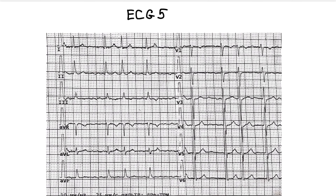Now let's think about the rhythm here. We look for the p-wave, but there are no p-waves. The QRS complex is narrow and not widened or deformed. The rhythm is irregular. This is atrial fibrillation. Atrial fibrillation is characterized by the combination of two main features: the absence of p-waves and an irregular rhythm.